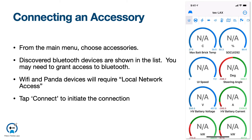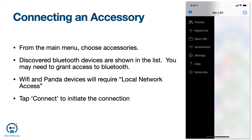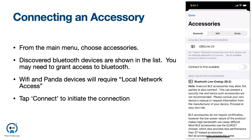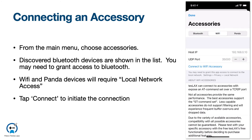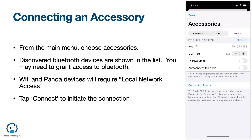Next, let's see how to connect an accessory. First, tap the accessories item from the main menu. Any Bluetooth devices that are discovered will appear in the list under Bluetooth. This includes Bluetooth classic accessories like the OBD-Link MX Plus, as well as Bluetooth Low Energy accessories. The Wi-Fi tab allows you to connect to a Wi-Fi accessory. Enter the host IP and port and tap Connect. Similarly, a host IP and port are necessary for a Panda accessory. The passive mode is a special use case which should usually be left off. Wi-Fi and Panda devices will need access to your local area network in the iOS permissions. Tap Connect to initiate a session.